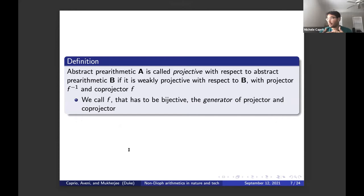Another definition is what we call projective pre-arithmetic. Abstract pre-arithmetic A is projective with respect to pre-arithmetic B if a projector and co-projector come from the same function, that is called the generator of projector and co-projector. In particular, a projector is going to be the inverse function and co-projector is going to correspond to the generator. And of course, it has to be bijective. If you have any questions, I can answer. Otherwise, I'll just continue.